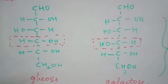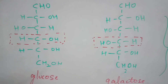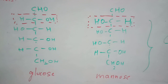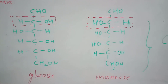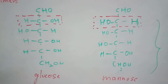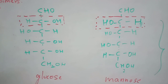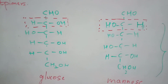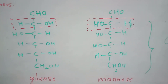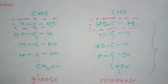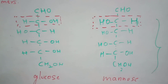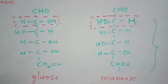Another example: comparing glucose with mannose. Both glucose and mannose consist of six carbon atoms. At the second carbon of glucose, the OH group is on the right and H is on the left. In mannose, the second carbon has OH on the left and H on the right — opposite to glucose. This change occurs at the second carbon atom.